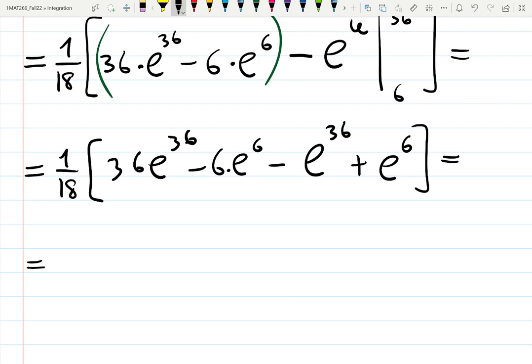And the answer becomes—check it out—36 e to the 36 minus 1 e to the 36 becomes 35. Let's keep it factored: 1 over 18. There's going to be 35 e to the 36, and then minus 6 e to the 6 plus 1 e to the 6 gives you minus 5 e to the 6.